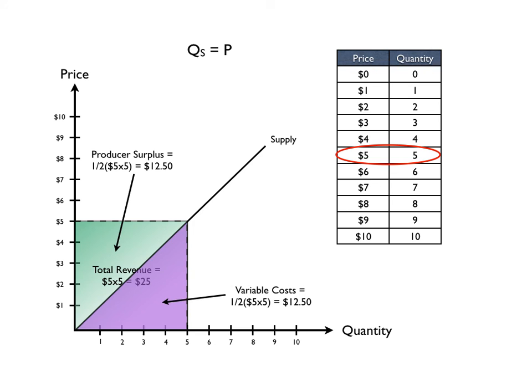The green area represents the producer surplus. This is the gain to the producer for producing five units of goods, selling it at five dollars a piece for total revenue of $25. On the next video, we're going to look at movement along a supply curve and movement of the supply curve.